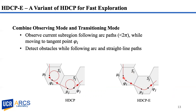The two variants reveal the trade-off between exploitation and exploration. HDCP guarantees resolution-complete coverage of unknown yet bounded environments by visiting all subregions and achieving full coverage within each subregion, whereas HDCPE enables fast and complete exploration in terms of visiting all subregions.